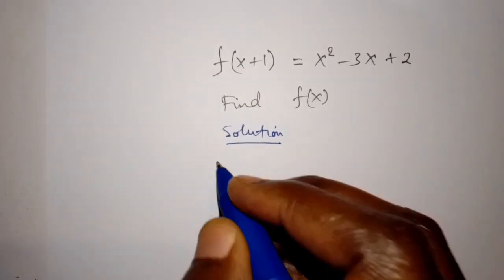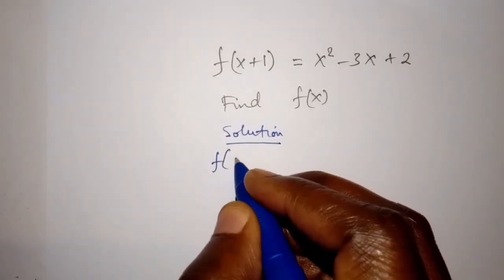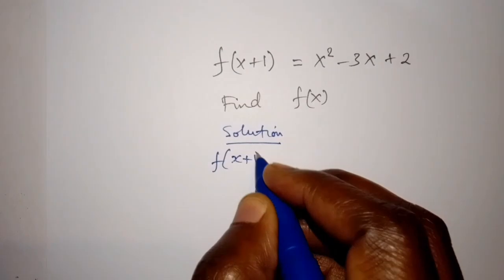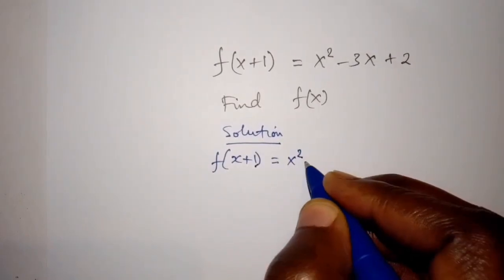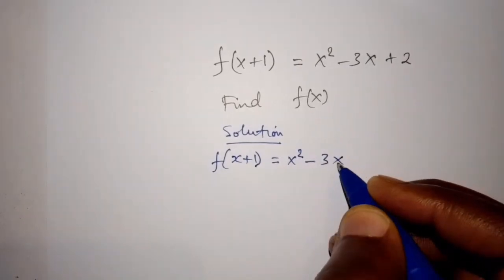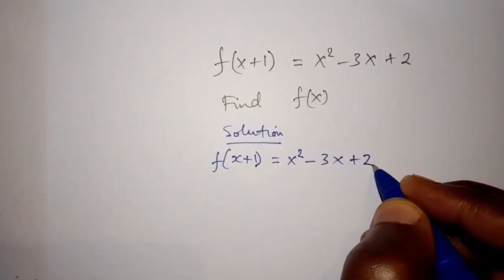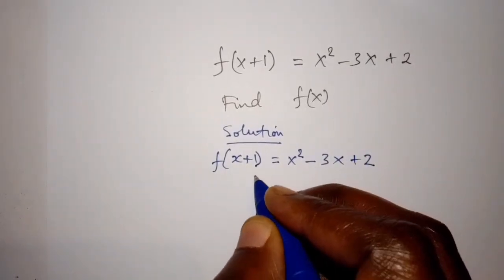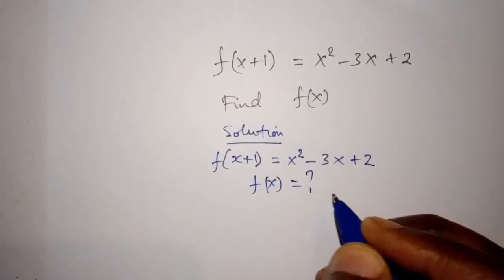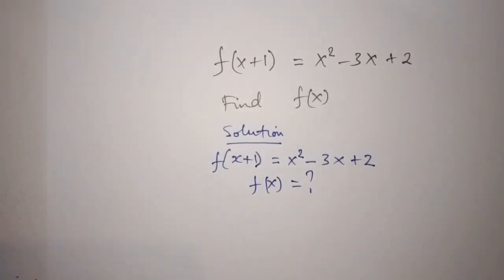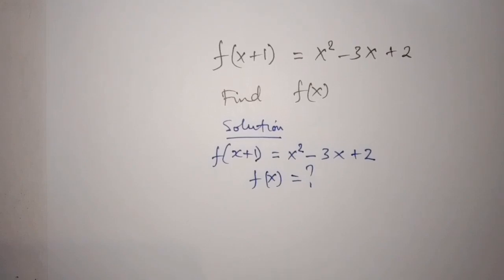We are given f of x plus 1 is equal to x squared minus 3x plus 2. We want to find f of x. We can use the t substitution.